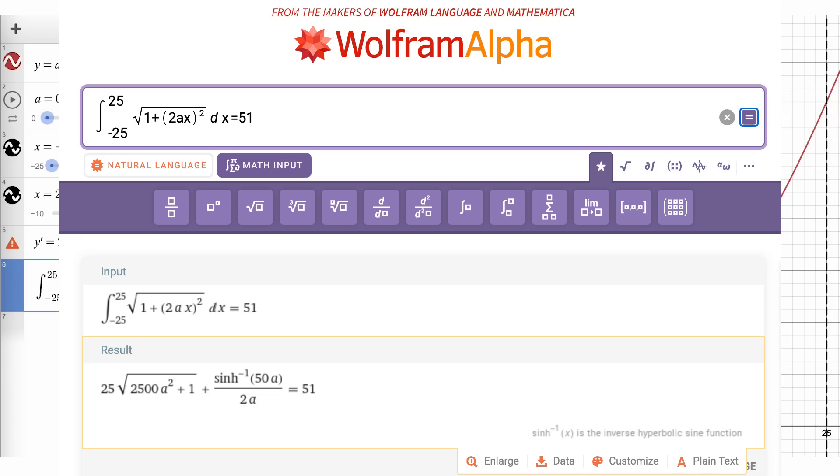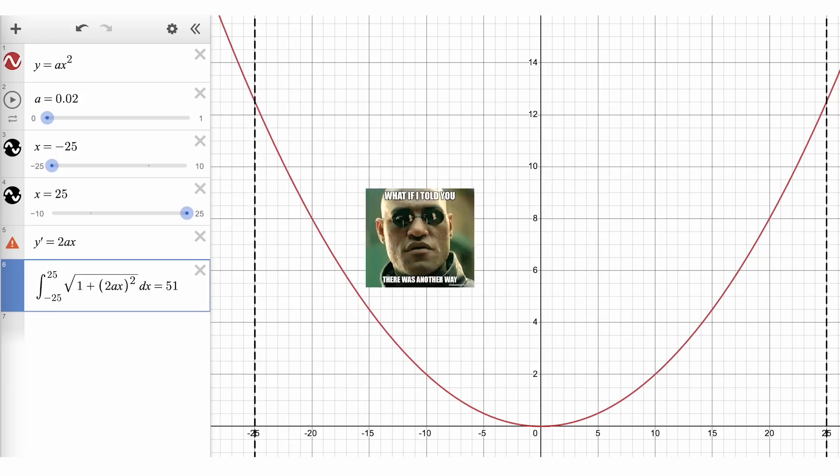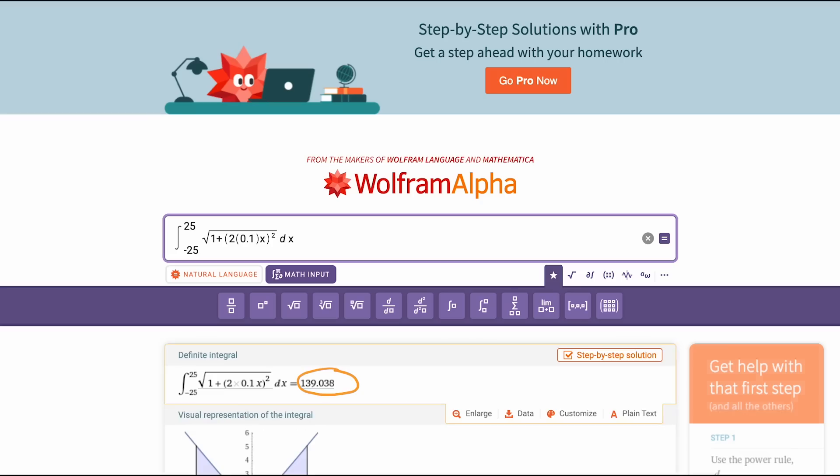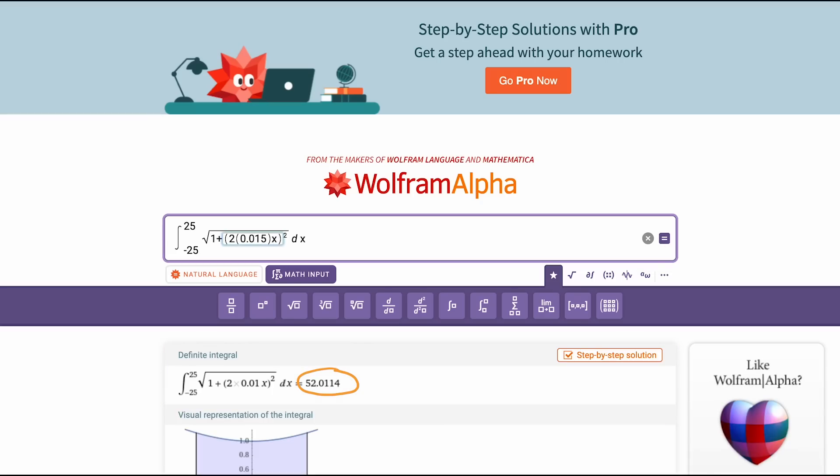This is an integral equation that an adventurous calculus student could try to solve by hand, but they'll get stuck trying to find the exact answer. Even using Wolfram Alpha, it only gets us so far. But there is another way to find a close value of a, we can use the good old guess and check method, and have Wolfram Alpha do the checking part for us.